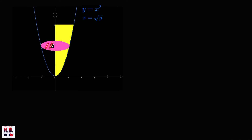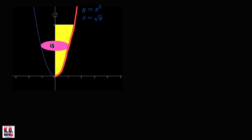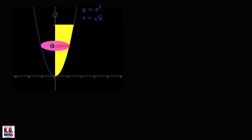If we treat this as our cross section, it is perpendicular to the y-axis and crosses it at y. The radius of this cross section is the x-coordinate of the point on the boundary curve. From the equation y equals x squared, that x-coordinate equals the square root of y, so the right part of the parabola is x equals square root of y. Therefore, the radius equals the square root of y.